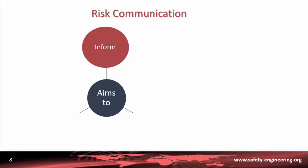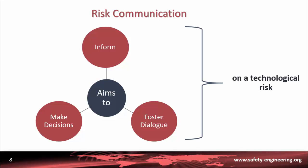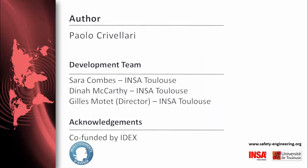Risk communication in these lectures will be conceived as something intended to inform citizens and the general population, to foster dialogue — which means to initiate participatory processes with citizens — and possibly to make decisions for the public good. This is applied to technological risk. So risk communication, for our purposes, is a particular type of communication about technological risks — for example, nanotechnology, genetically modified organisms, base station transmitters for mobile phones, or industrial risks — with goals such as to inform, to foster dialogue, or to make decisions.